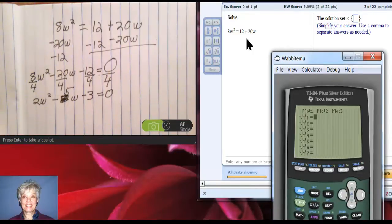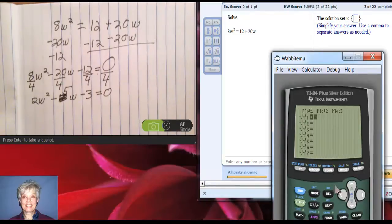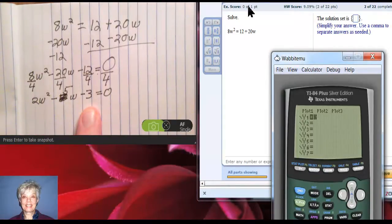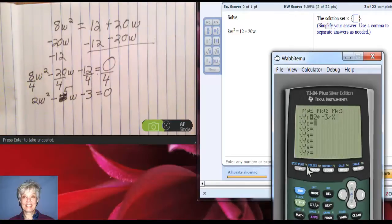All right. I will take my trusty calculator and I will say a times c, so that's going to be 2 times -3. Okay, and now x plus 2 times -3 times -3 divided by x.